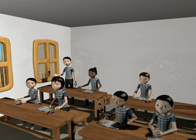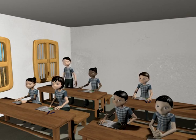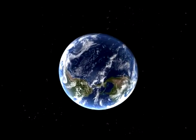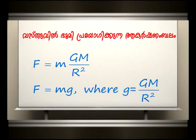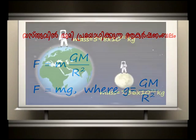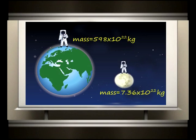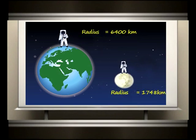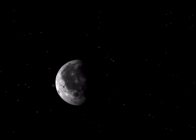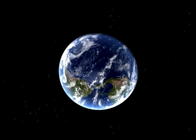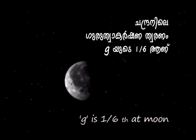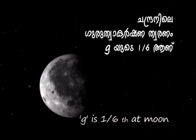Is the weight the same for a body on earth and on the moon? The weight of a body on the moon will be less than its weight on the earth. Using F = mg, where g = GM/R²: the mass of the moon is 1/81 of the mass of the earth and its radius is 1/3.66 of the radius of the earth. Therefore, the acceleration due to gravity on the moon is less than on the earth — about 1/6 of g on earth.